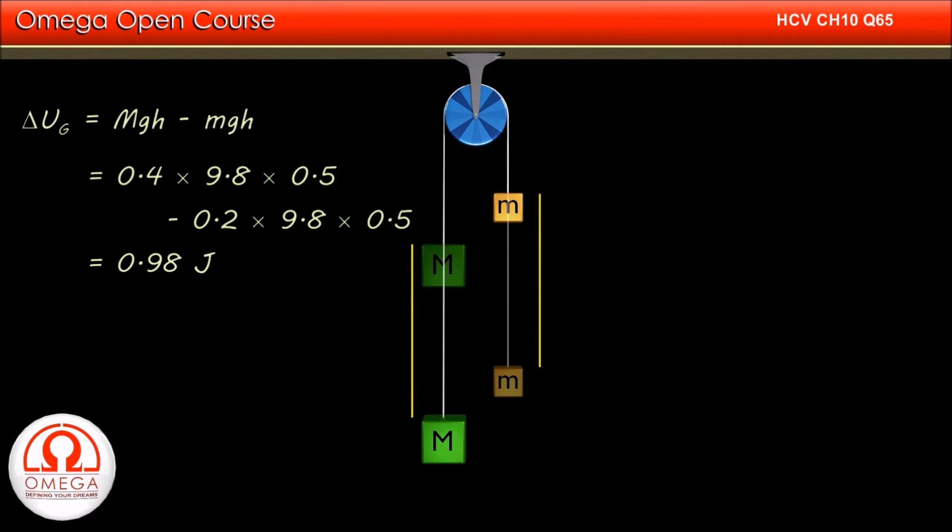Since there is nothing in the system which might dissipate energy, this decrease in gravitational potential energy must be stored in the system in form of kinetic energy. Therefore, the kinetic energy of the system is 0.98 joules. This is the answer to the first part of the question.